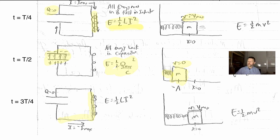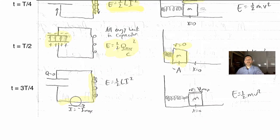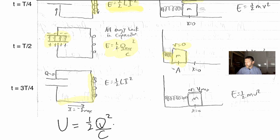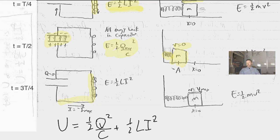The total energy of our LC circuit is simply: U-total equals one-half Q-squared over C plus one-half L times I-squared. That is our total energy of the LC circuit. What's really cool is that it has a resonance frequency.